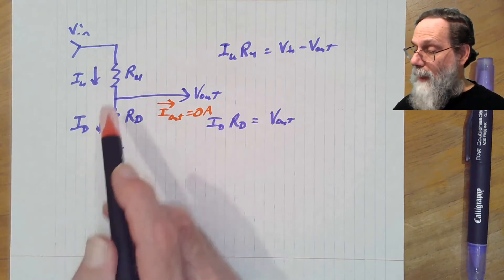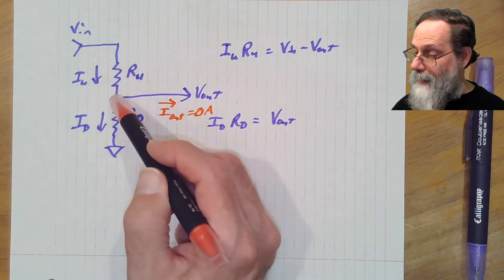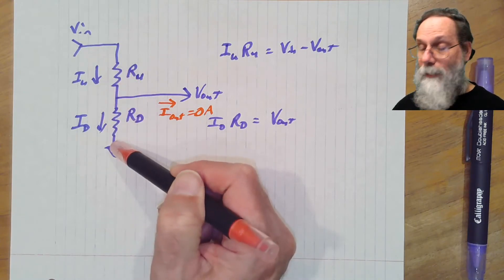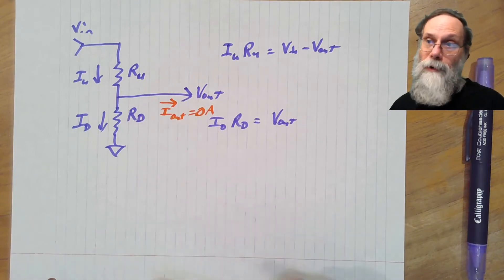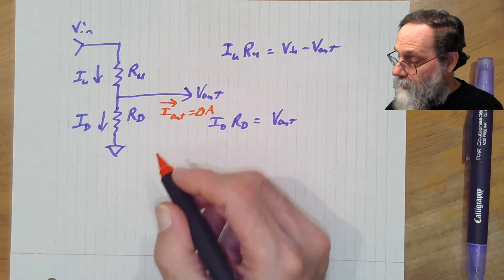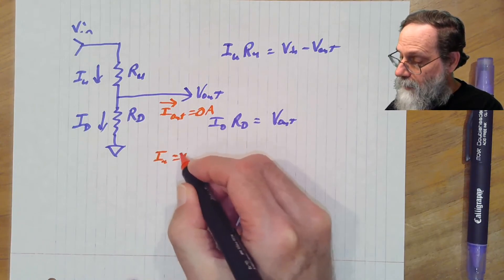Then we have, based on Kirchhoff's current law, that the current coming in through Ru has got to go out through Rd. We haven't got any other place for it to go. Zero current in the only other place it could go. So that would give us that under that condition, Iu is equal to Id.